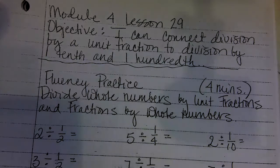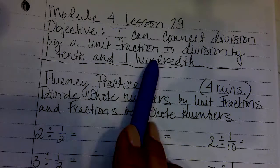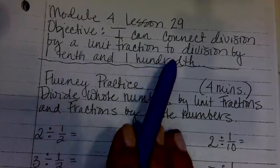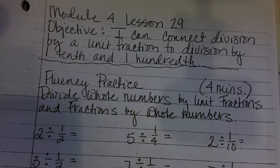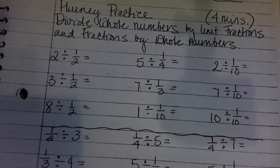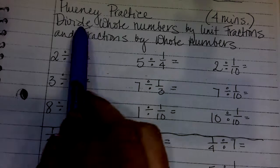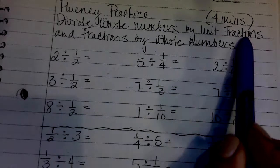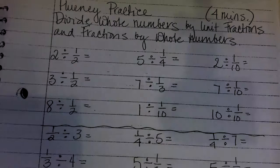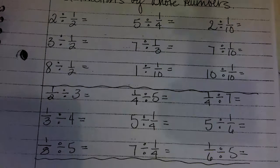Remember back in Module 1 when we were multiplying and dividing by tens, hundreds, and thousands, and we were moving the decimal — that's where we're going today. It should be a really nice review. Before we get started, we're going to do some fluency: dividing whole numbers by unit fractions and then fractions by whole numbers. Go ahead and start and come back to check your work in just a moment.